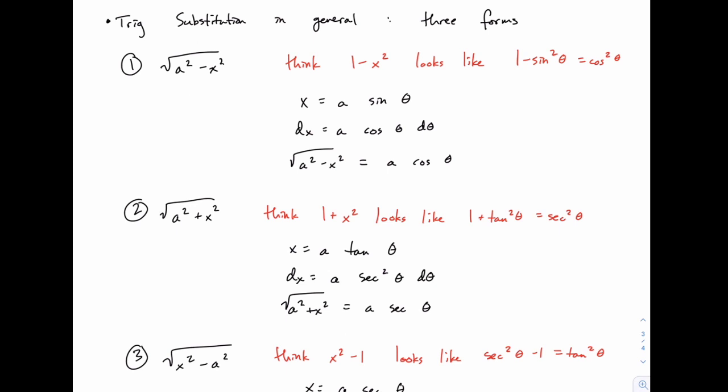Both examples that we've done so far are of this first form. We did 1 minus x squared inside the square root and we did 4 minus x squared. So both of them fit the form a squared minus x squared. And of course a squared doesn't have to be a perfect square, it could be like 5 for instance, and then a would be the square root of 5.